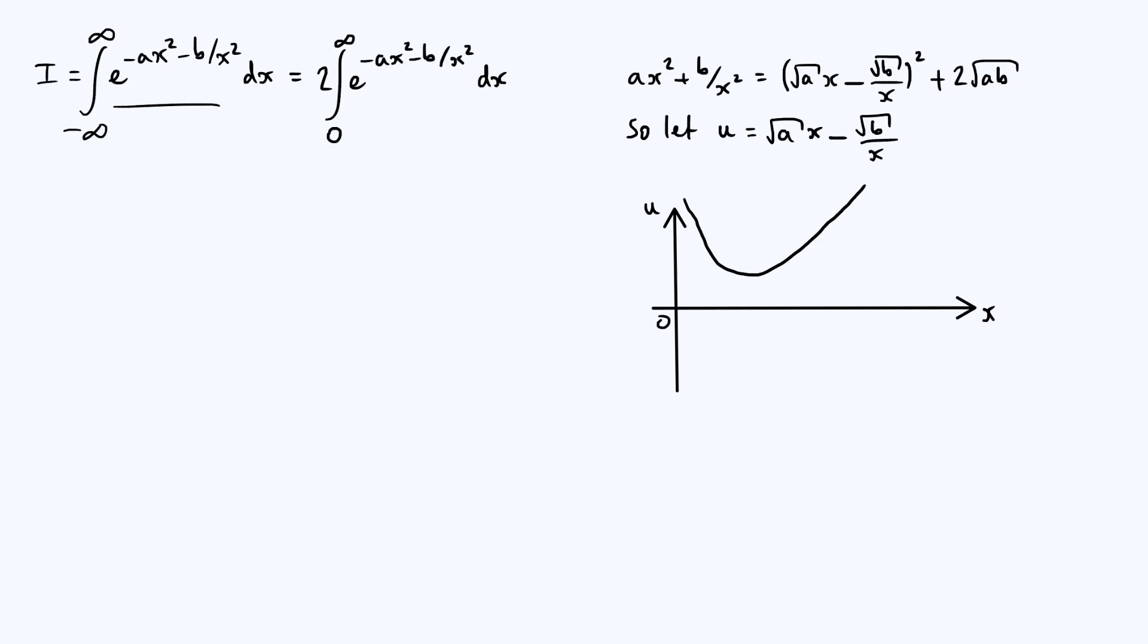But then when x is small, now your graph looks like a negative reciprocal. And so it would look something like negative reciprocal down here, and then it would just sort of tend towards the same straight line for large values of x.